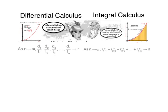Notice in the two examples shown here for differential and integral calculus that the same three variables—rate, time, and distance—are being used, first as an infinite sequence of ratios, then as an infinite series of products.